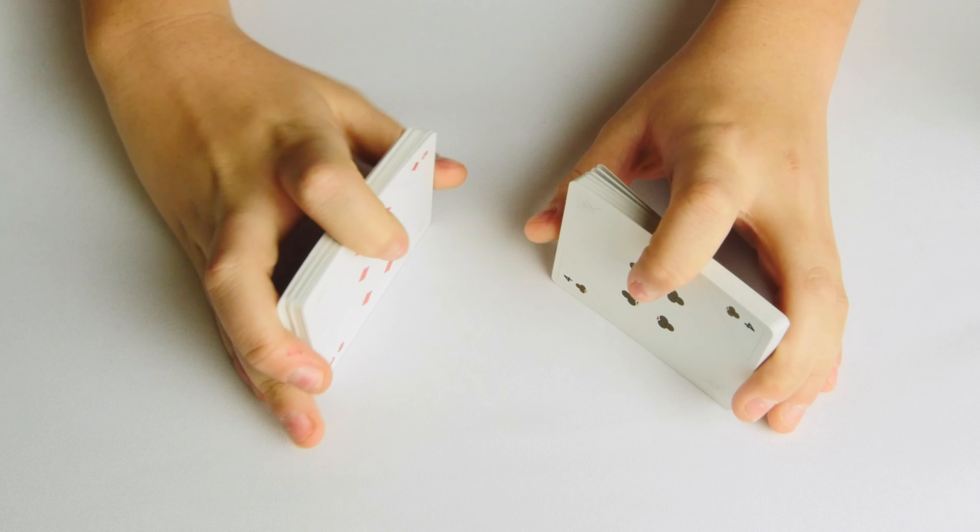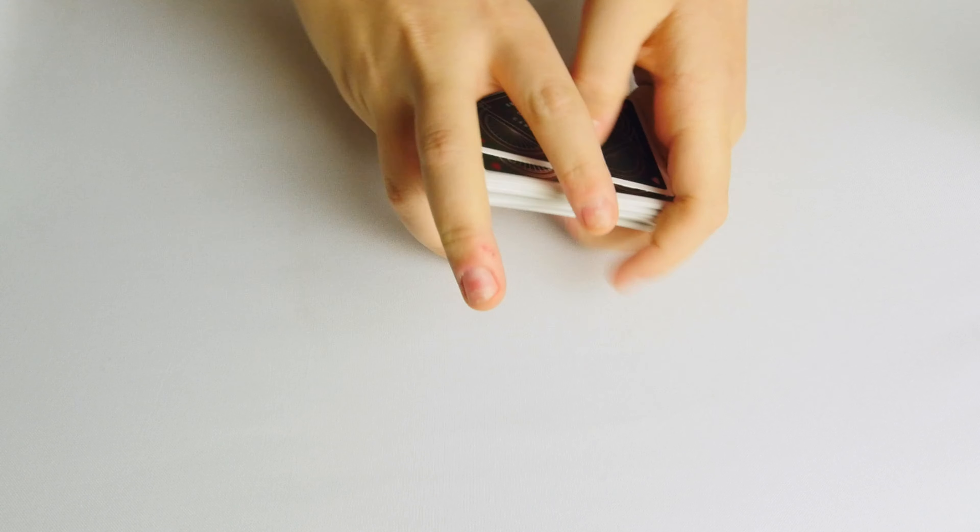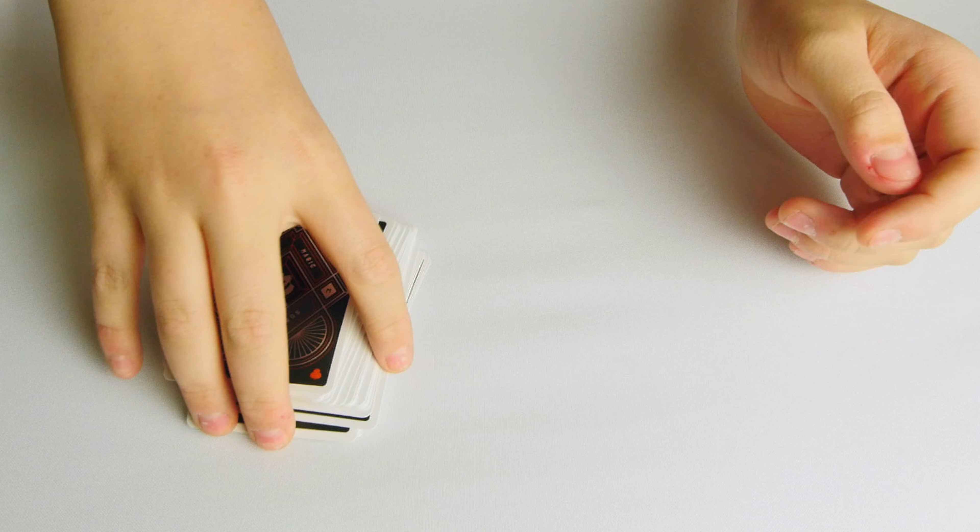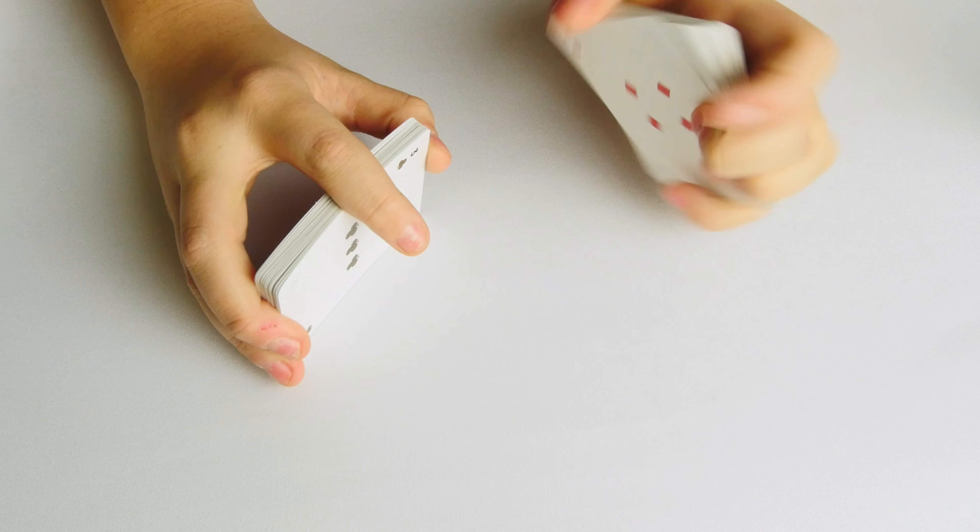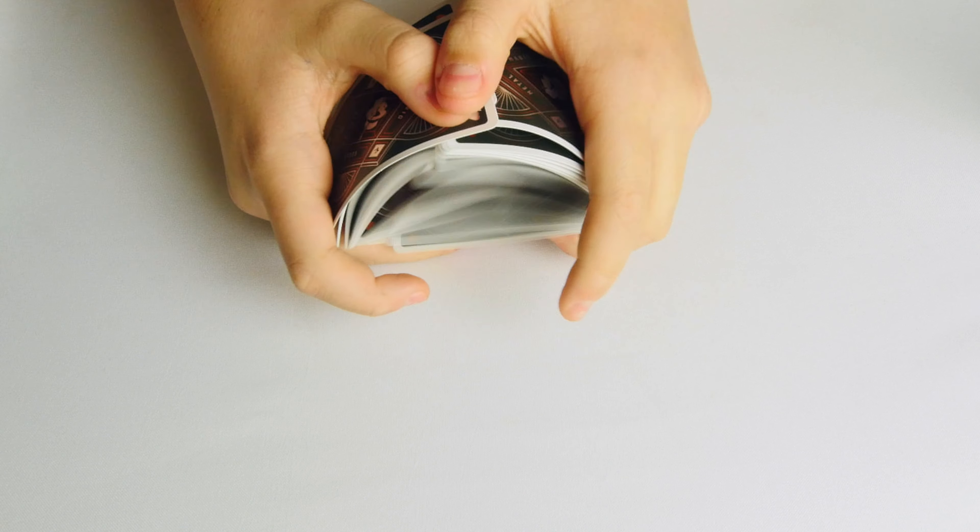When you demonstrate this trick to your audience, you're going to want to shuffle the deck. You can even have an audience member shuffle the deck. Now, cut the deck in front of them or allow someone in the audience to cut the deck for you. Do another shuffle, and that way the audience knows that these cards are completely mixed up. They're totally random.